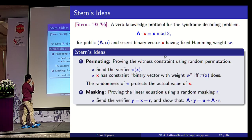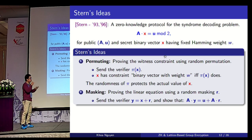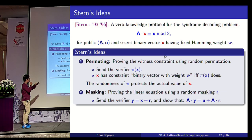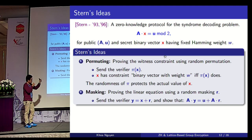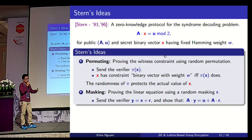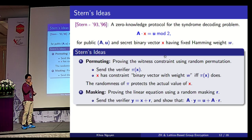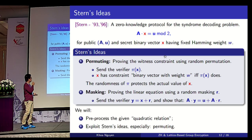The second idea is masking: to prove the linear equation using a random masking vector R. Specifically, we send the verifier Y equal to X plus R and show instead that A times Y equals U plus A times R. This is sufficient to convince the verifier that the original equation A times X equals U holds.